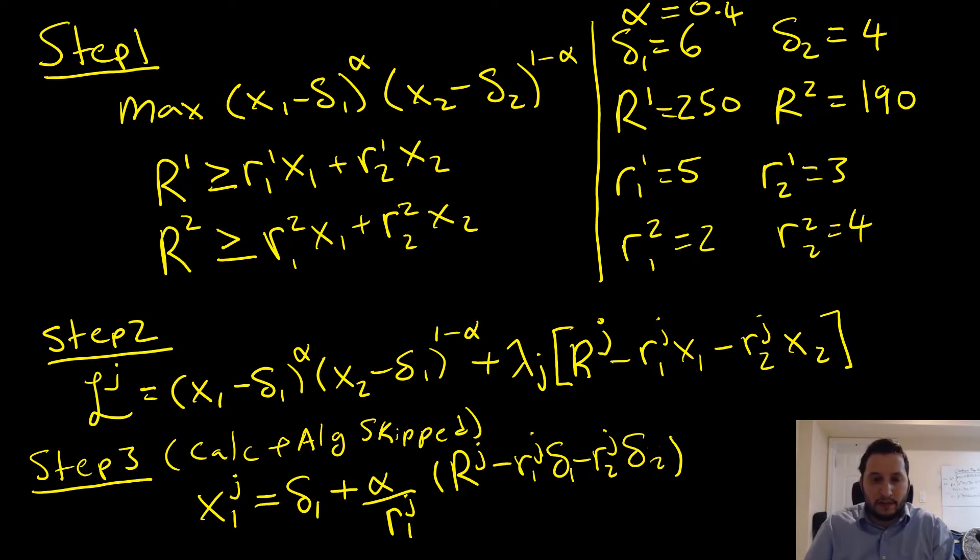Step number one is that we're going to first really anonymize our information here. We're going to first write out our problem, putting letters where numbers should be, and then naming those numbers.